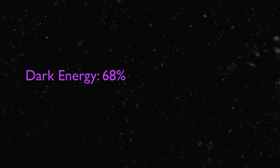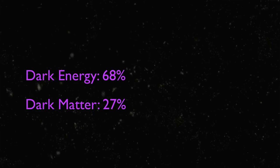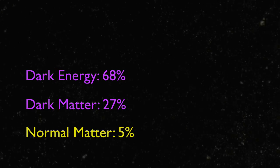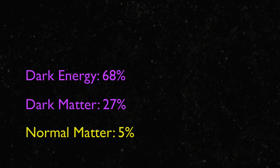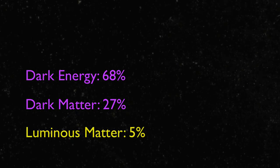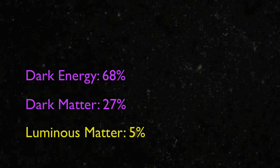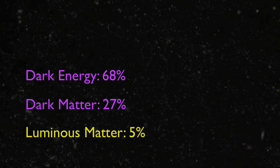Current estimates are that the universe is made of about 68% dark energy, about 27% dark matter, and a mere 5% normal matter. Better to call it luminous matter. For if the occurrence of normal matter is only 5%, then that's hardly normal, on a universal scale, at least.